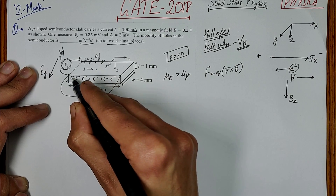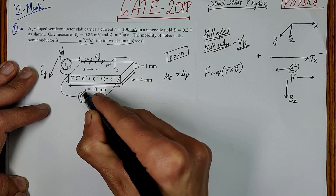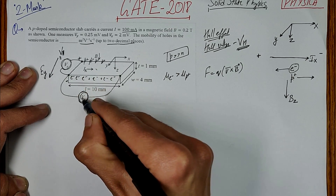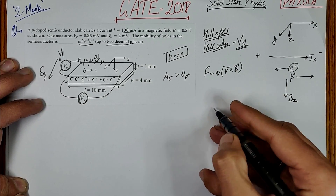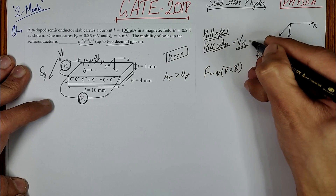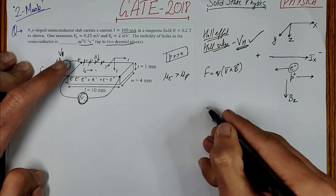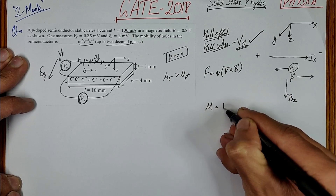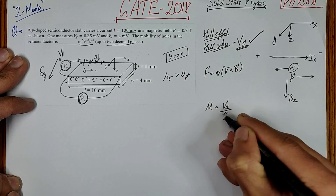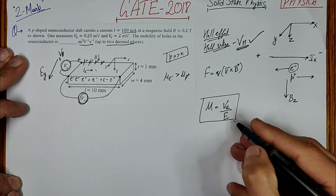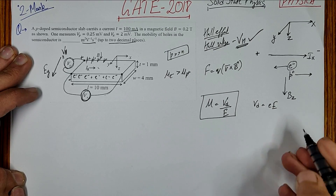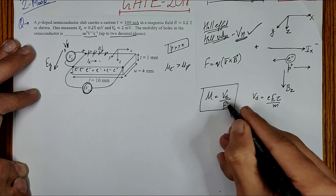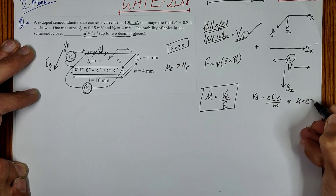The current flowing here is due to voltage Vx in the x-direction, so current Ix flows due to Vx. We need to find mobility. Mobility is defined as drift velocity per unit electric field. Drift velocity Vd equals eEτ/m, so mobility μ = eτ/m.